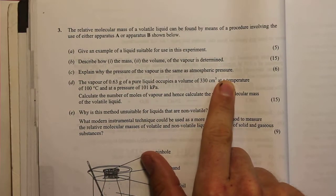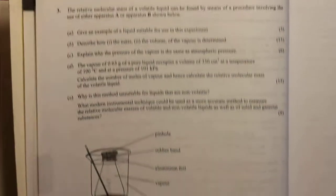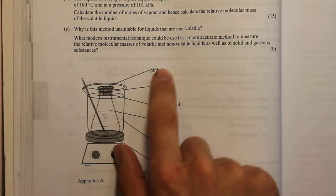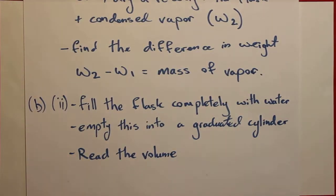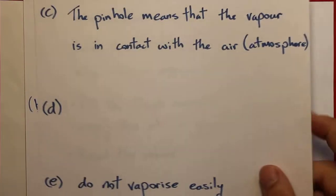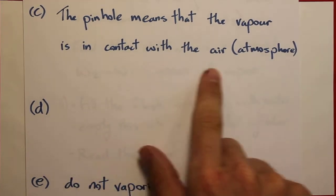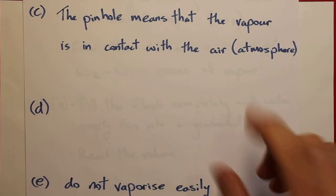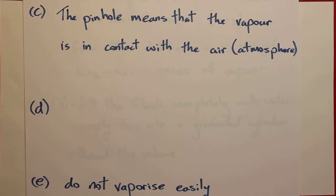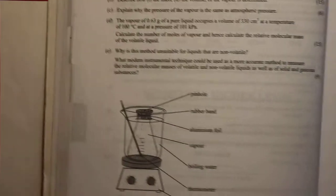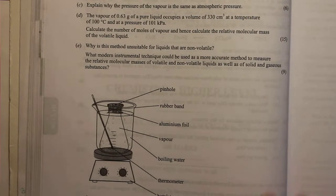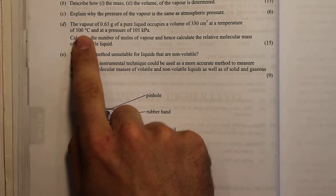For part C, we explain why the pressure of the vapor is the same as atmospheric pressure. That's because we have a pinhole in our aluminium foil, which means the vapor is in contact with the air — in contact with the atmosphere — so the pressure inside the container is the same as the pressure outside.